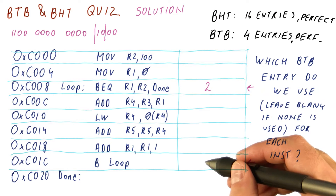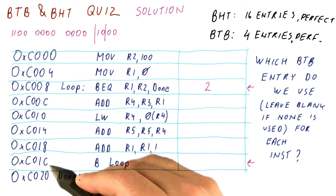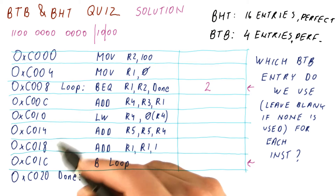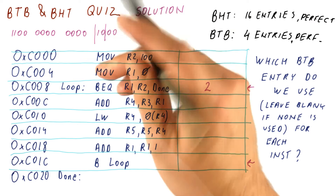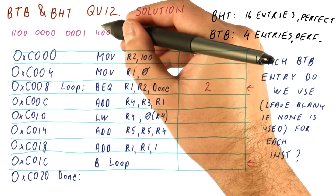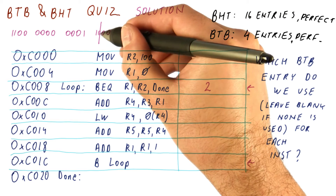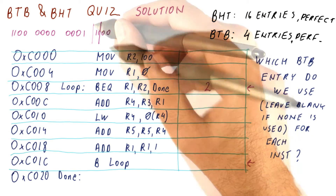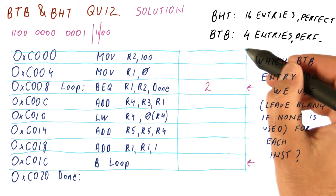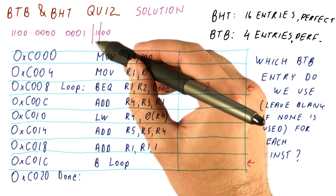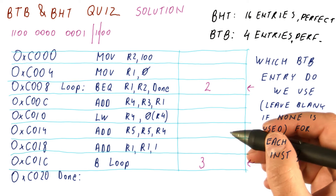The other instruction we need to figure out is at address C01C. Again, we ignore the lowermost bits that stay the same, and take the next two bits because we need to know which of the four entries to use. We get 11, which corresponds to entry number three.